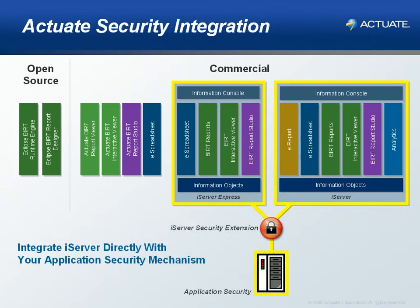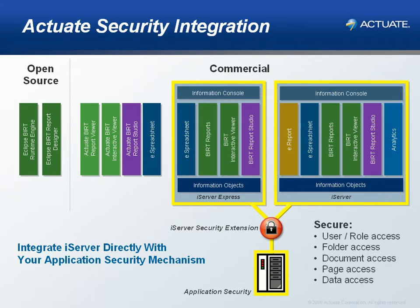The Actuate iServer and iServer Express offer inherent user and role-based security, which can be easily integrated to your application's security mechanism. Using the Actuate iServer Security Extension API, the iServer is able to tie into and enforce your existing security model, ensuring that only those who should see the information are allowed to. Actuate controls data access at many levels, ranging from user or group access to a given document or folder, all the way down to page-level access to a particular portion of content.